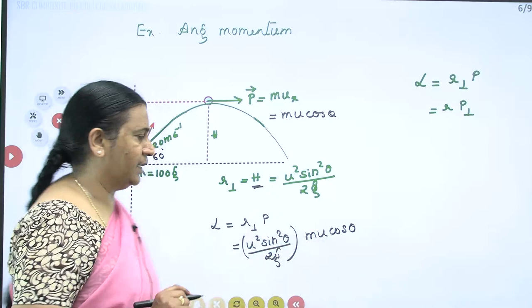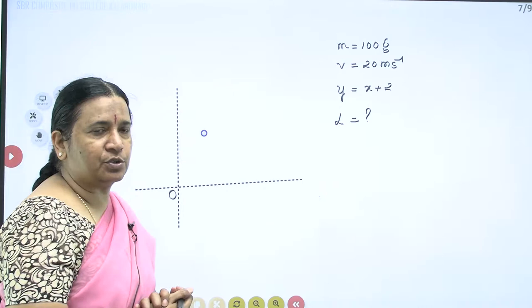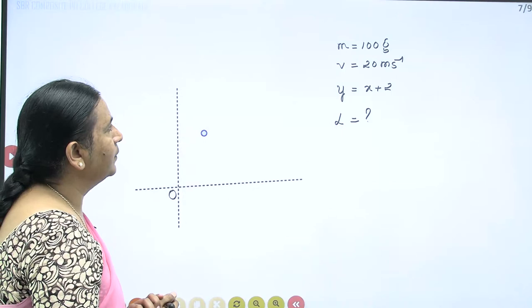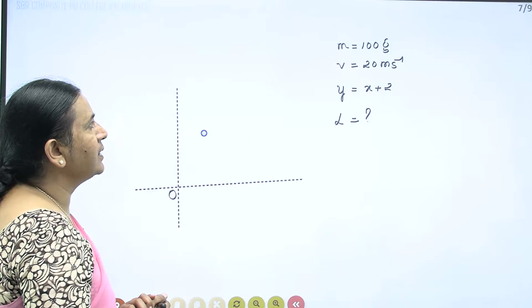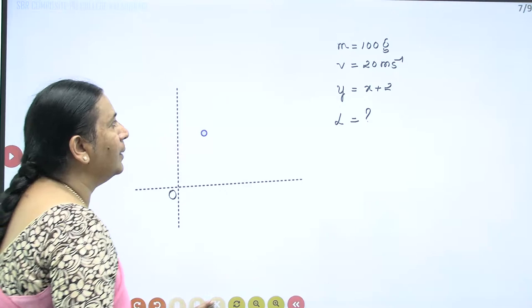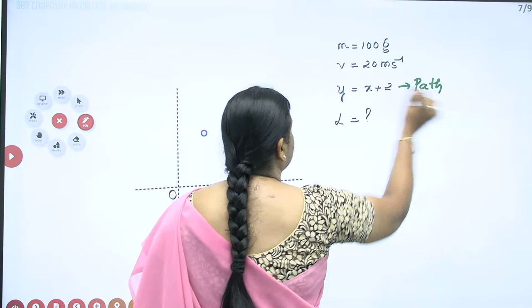Here is one more question with translatory motion of a particle. A particle of mass 100 grams is moving with a constant velocity of 20 m/s along a path given by y = x + 2.